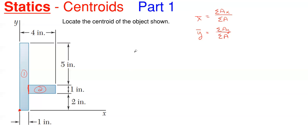The third step is to start with a table. This is the easier procedure to work with. This becomes much, much easier when you have more complicated shapes. This table method may seem a little tedious, but as they get more complex it makes life so much easier — especially when you go beyond centroids into what's called moment of inertia.